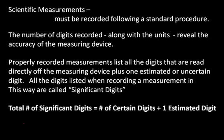So properly recorded measurements list all the digits that are read directly off the measuring device plus one estimated or uncertain digit. All the digits listed when recording a measurement in this way are called significant digits. So the total number of significant digits that are reported for a measurement equals the number of certain digits plus one estimated digit.